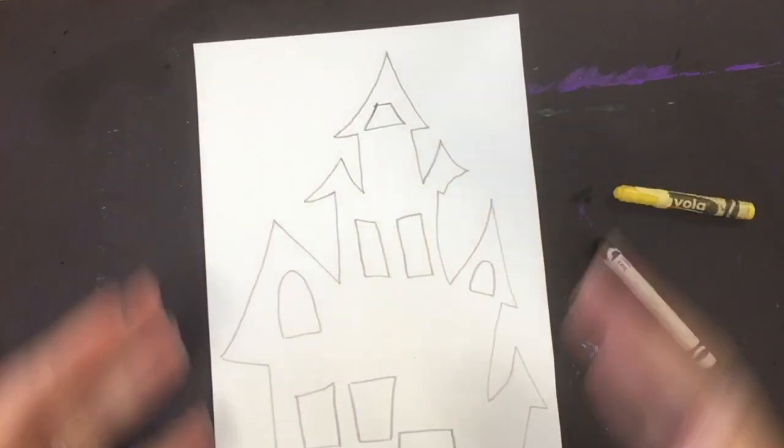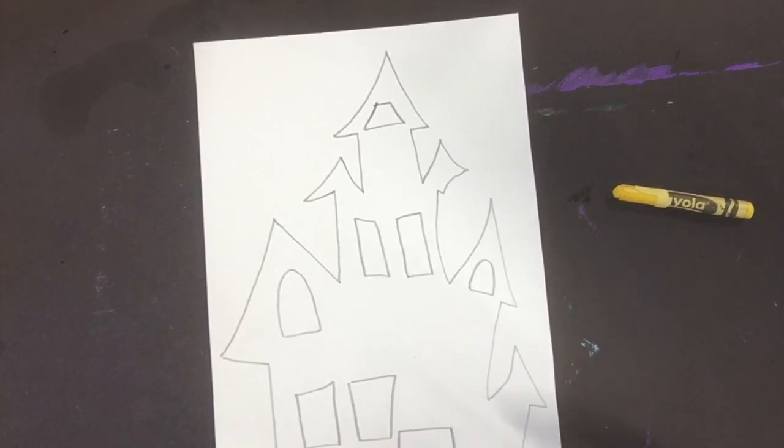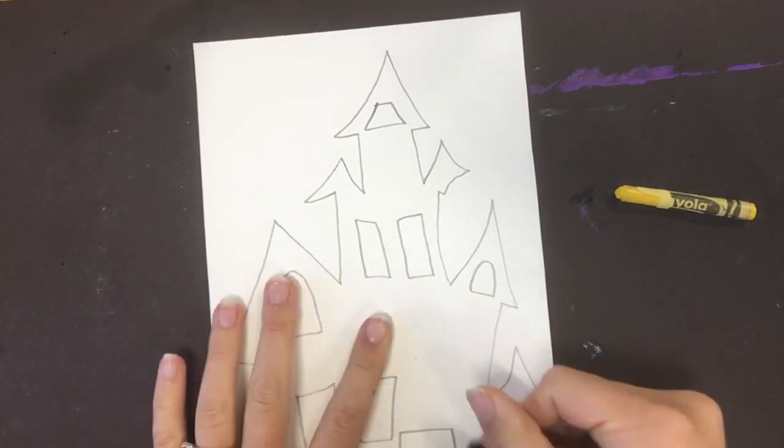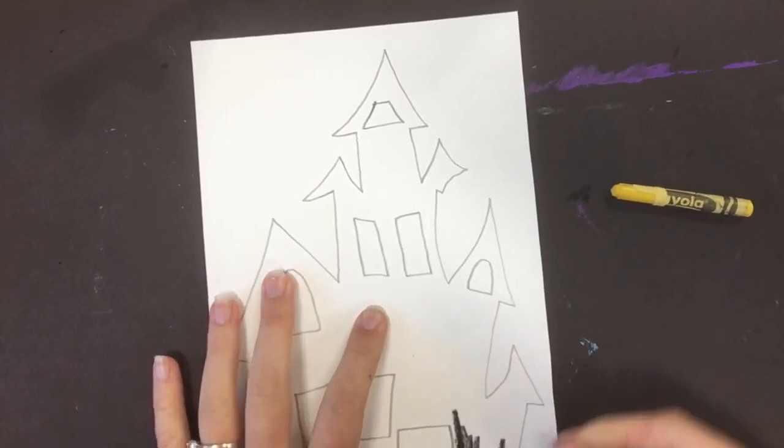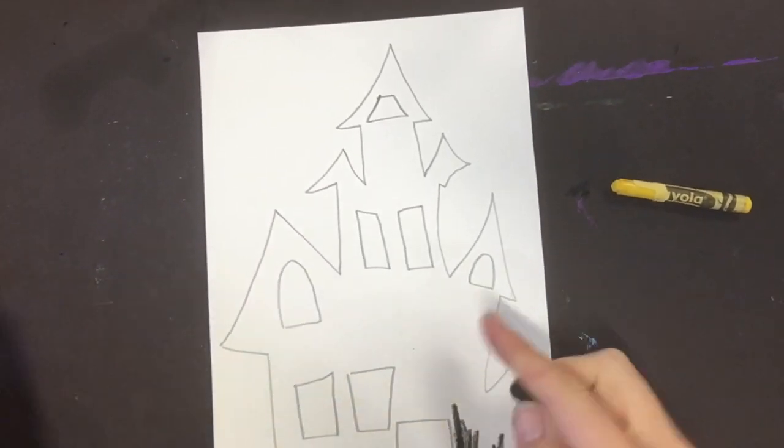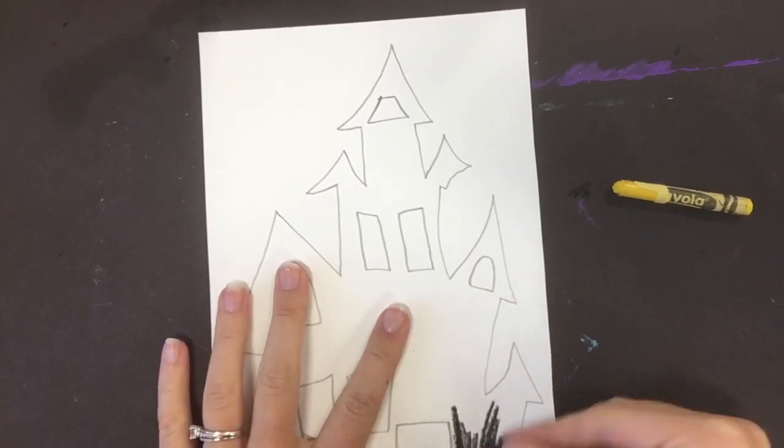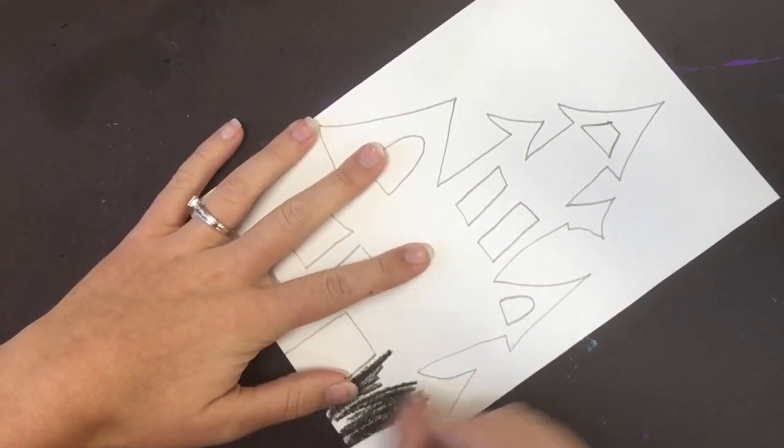After you're done drawing your outline, we're going to start coloring in the house part, not the windows, not the doors. This is all going to be black. If you're using crayon, you've got to press kind of hard. If you're using oil pastels, it's going to be really gushy and mushy, and you may not have to press as hard. So this might get kind of tiresome. So give yourself breaks.